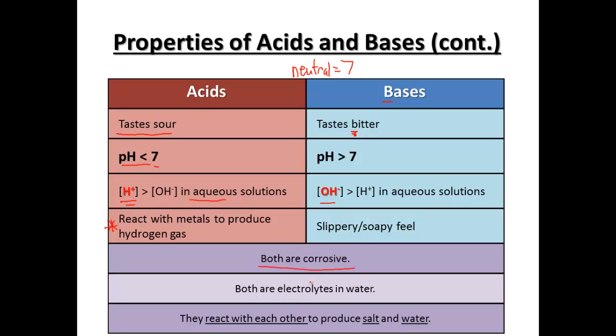Both are corrosive. Both are electrolytes in water, meaning when they dissolve in water they can conduct electricity. And they react with each other to produce salt and water. And salt is, remember, any non-metal plus a metal is going to be a salt. I wrote that backwards like NaCl. So switch those two around. So those are some of the properties of acids and bases.